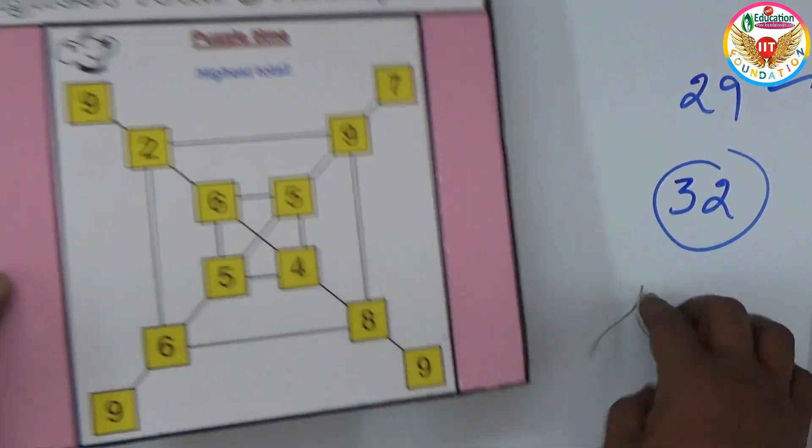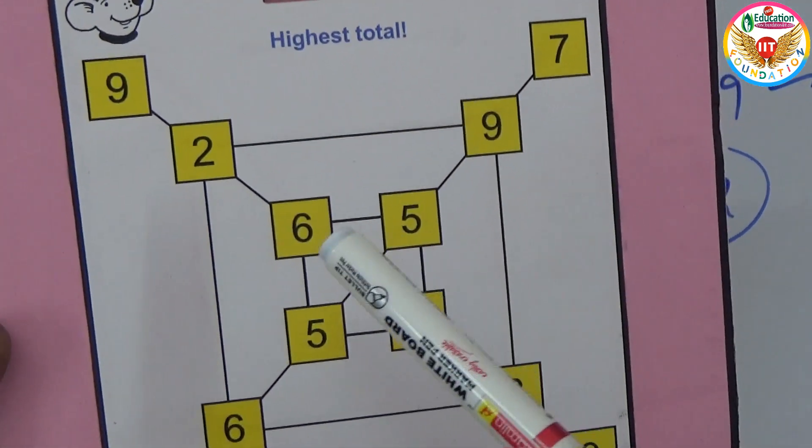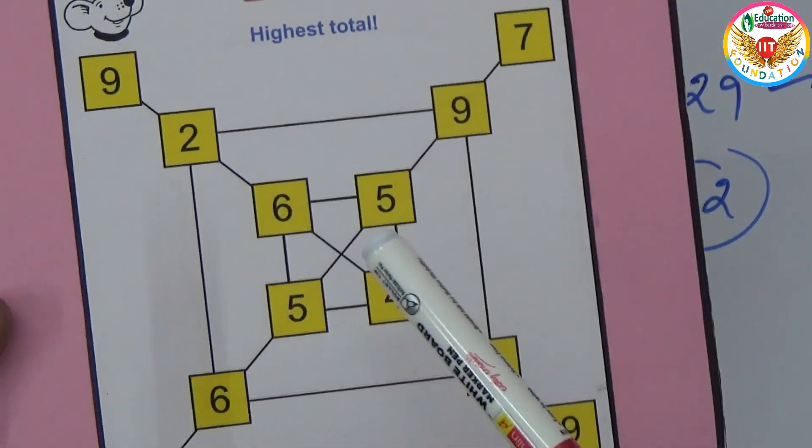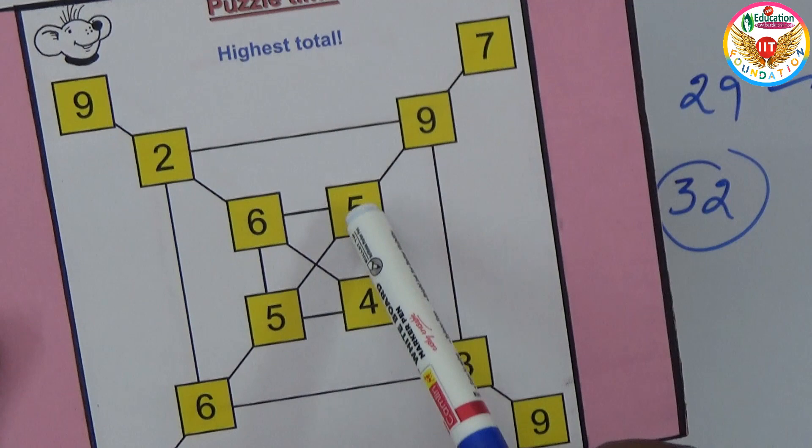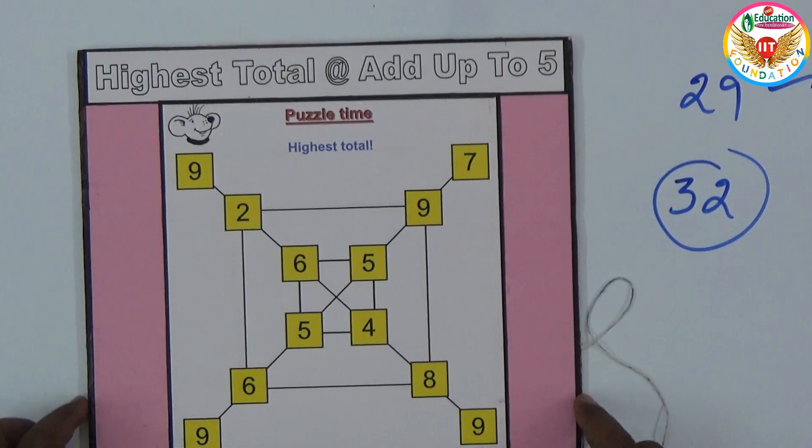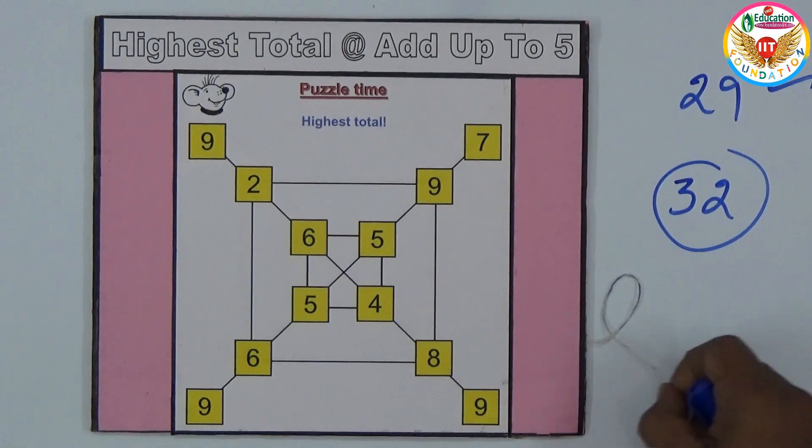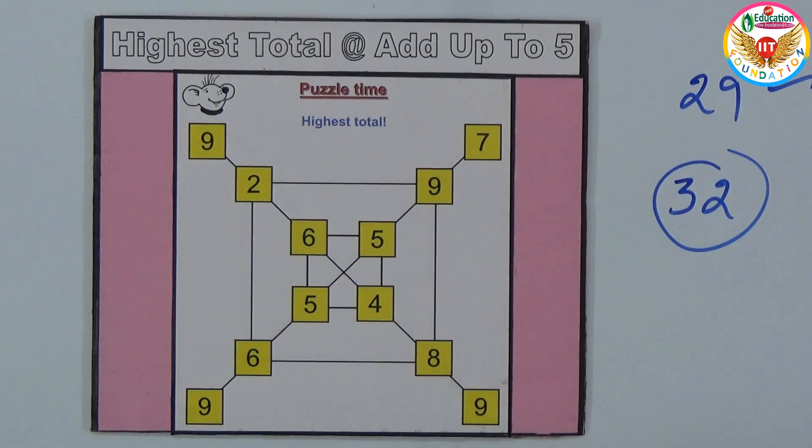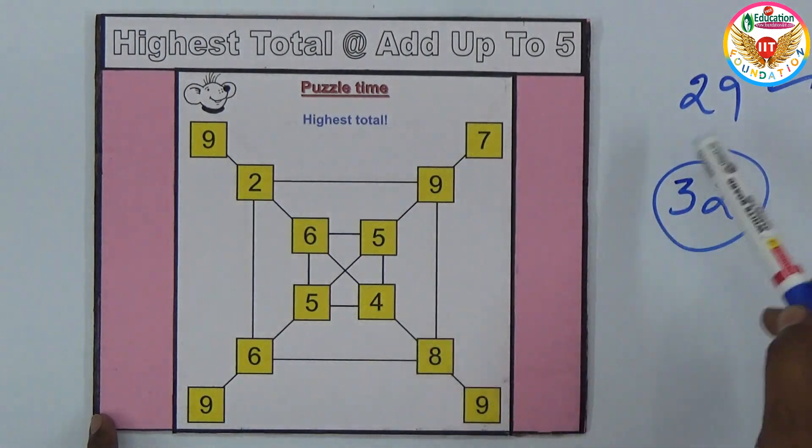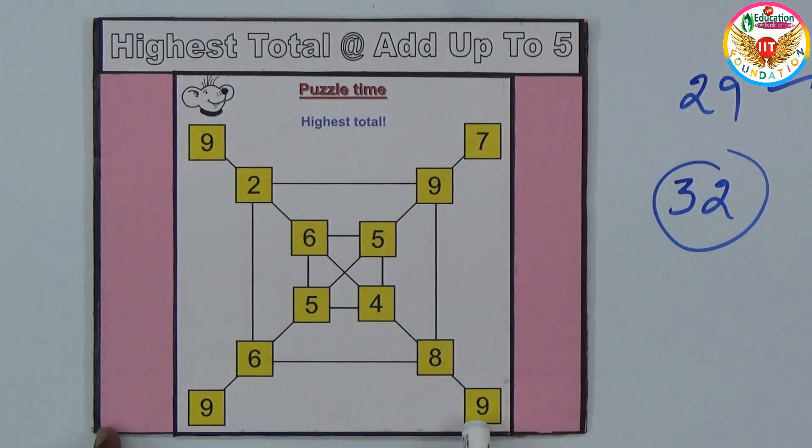From this you can start anywhere. If you start here you can go in this line also, zigzag also you can go, but the condition is on this line only we need to go and count up to five numbers to get the highest total. If I came this way I got only 29. If I came like this I got 32.